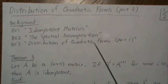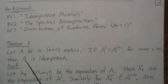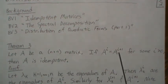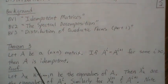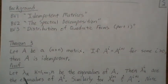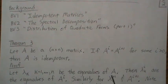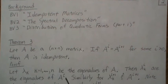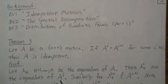Theorem 3: Let A be an n-by-n matrix. If A raised to the i equals A raised to the i+1 for some positive i, then A is idempotent. Here's a quick proof. Let lambda_k be an eigenvalue of A — there will be n of them. Then lambda_k to the i-th power are the eigenvalues of A to the i, and similarly lambda to the i+1 is the eigenvalue for A to the i+1.